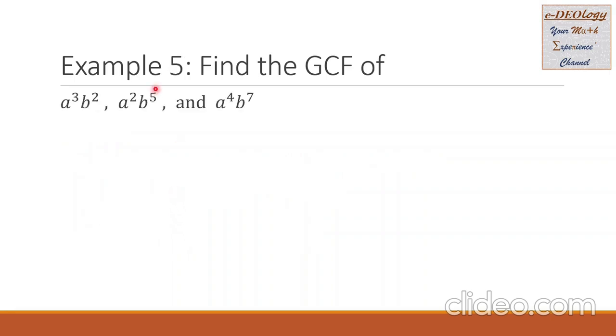Example 5: find the GCF of three terms. First term: a cubed b squared. Second term: a squared b raised to 5. Third term: a raised to 4, b raised to 7.